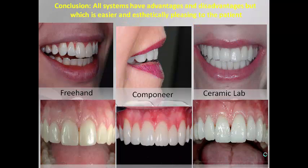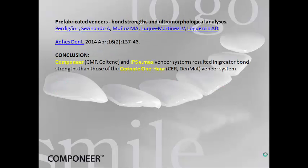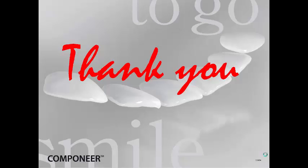As a conclusion, all systems have advantages and disadvantages, but which is easier and aesthetically pleasing to the patient? Literature states that the Componeer system can be used to lengthen anterior teeth, correct malpositioned teeth, mask discolorations, and close diastemas. Also, the Componeer and IPS e.max veneer systems resulted in greater bonding strengths than those of the Serenade one-hour veneering system. Thank you.